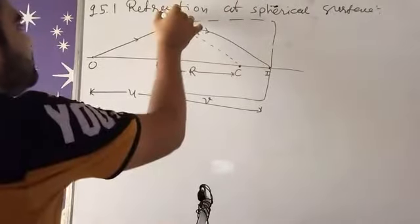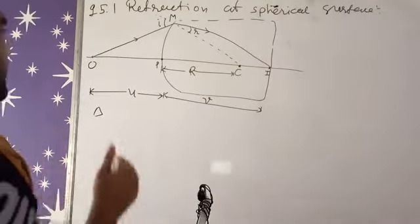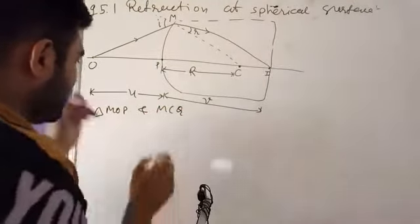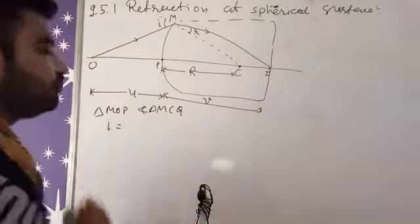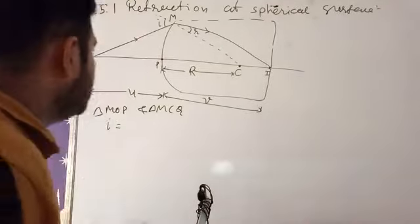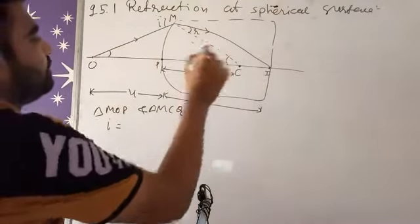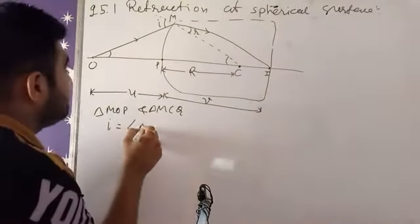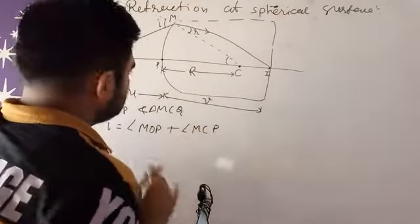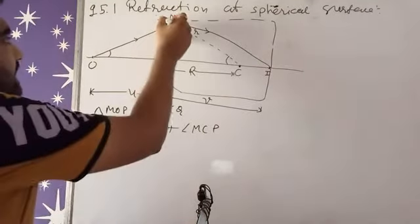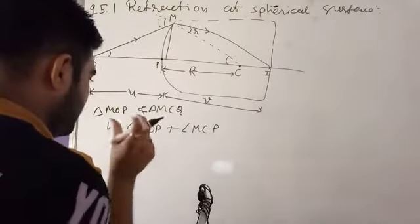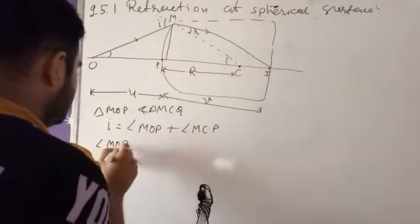Now consider point M on the surface. We look at two triangles: triangle MOP and triangle MCP. The angle i is an exterior angle, and the exterior angle equals the sum of the two interior angles. So angle i equals angle MOP plus angle MCP.